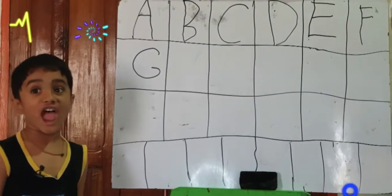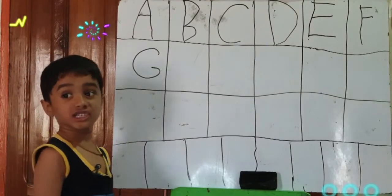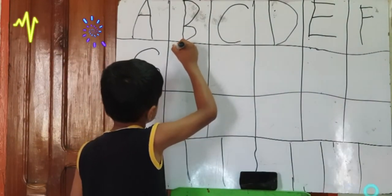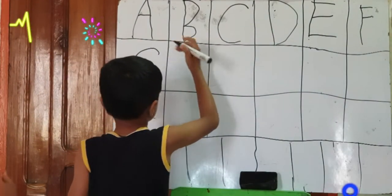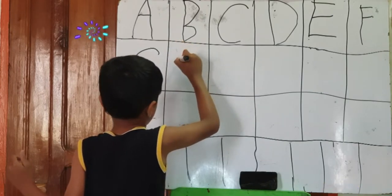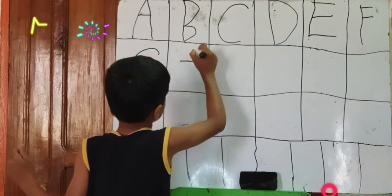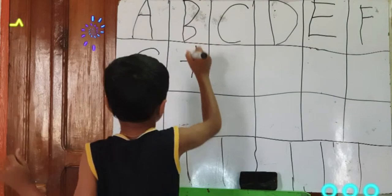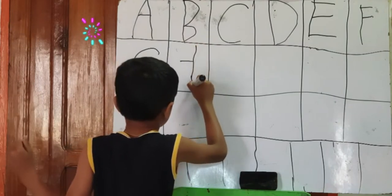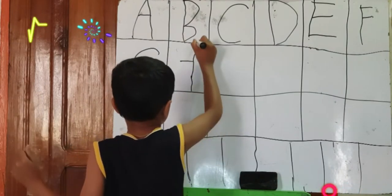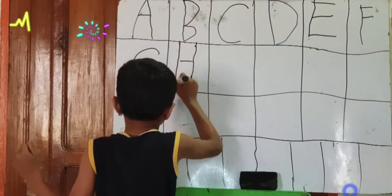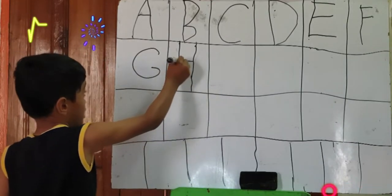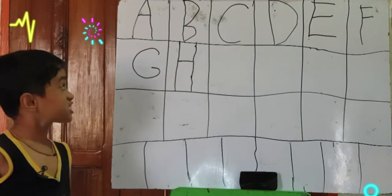Now we are going to learn H. One sleeping line, one standing line, one standing line. That is H.